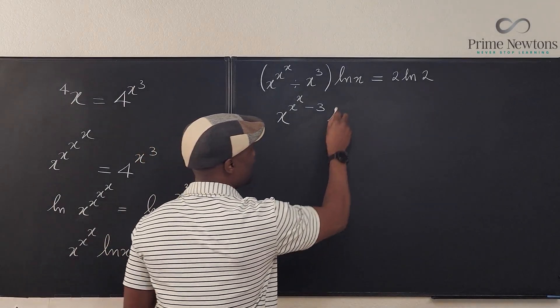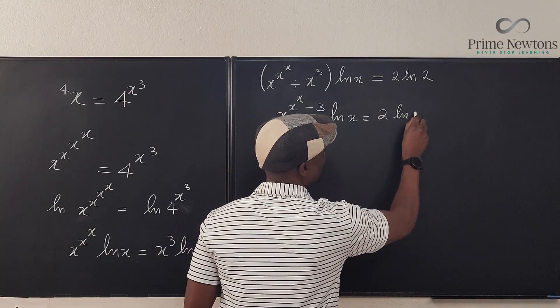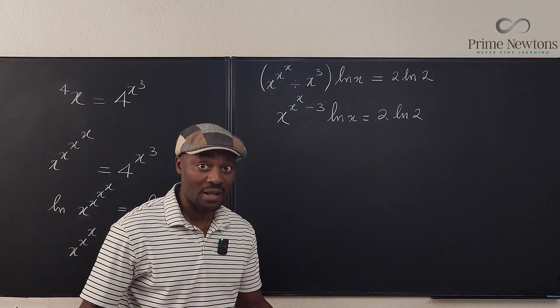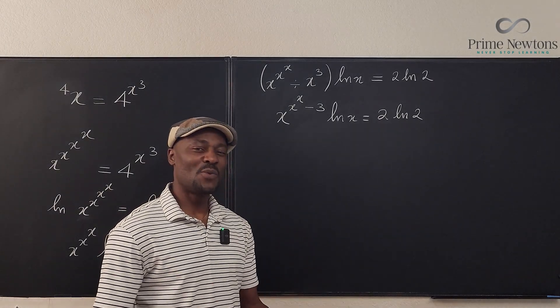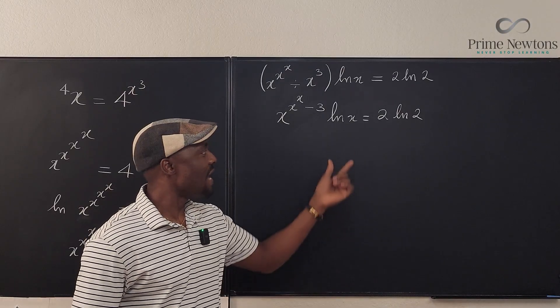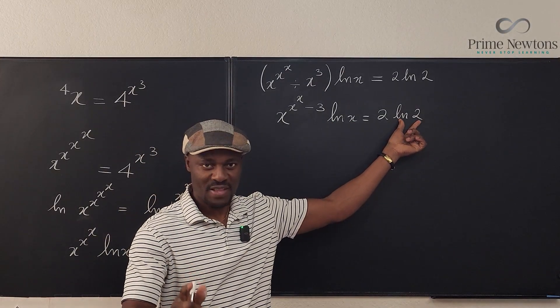Equals 2 times the natural log of 2. Now this is where I got stuck because at this point I don't know what else to do. So what I did was, I went, what if I say I assume that the natural log of x is the natural log of 2.